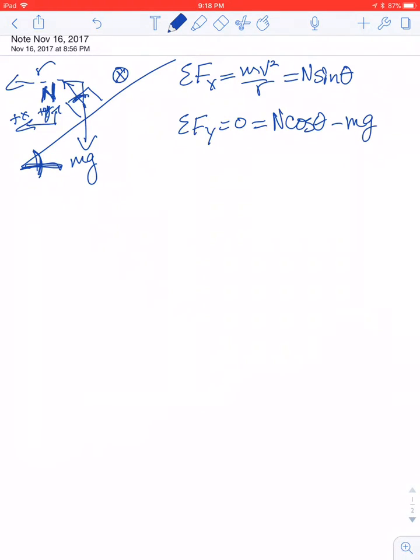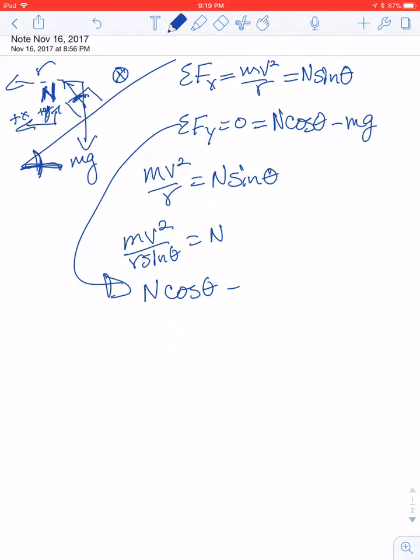And the trick with doing these banked curve problems is typically to solve for normal force, which is not something you often want in a problem like this, and set the two expressions equal to X and Y and see if you can't come up with an expression for the velocity or whichever thing you're looking for. In this case, we're looking for velocity. So I'm going to take the sum of the forces in the X. So the MV squared over R equals N sine theta. And I'm going to solve for normal force. So that's going to be MV squared over R sine theta equals normal force. And the sum of the forces in the Y was N cosine theta minus MG equals zero. So N cosine theta equals MG. So normal equals MG over cosine theta.